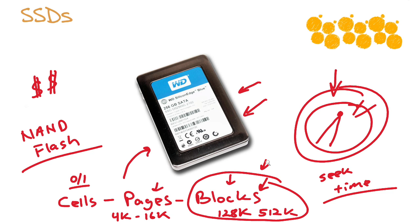Cells hold the 0 or 1 setting and are collected into pages and blocks. What's really interesting is that erasing a section of the flash memory and then writing information is done at the block level. This is one of the reasons we suspect it's termed flash technology — because an entire block is going to be erased and written to at a time. Another theory on why we call it flash technology dates back to the old EEPROMs, which were written to and erased utilizing ultraviolet light.